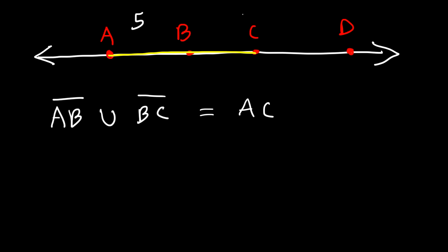Let's say if AB is 5 and BC is 4, AC is 9. So AC is basically AB plus BC. So the union of AB and BC is segment AC.